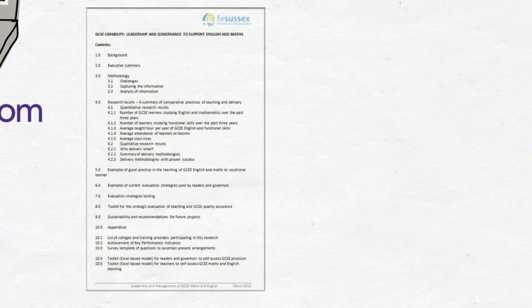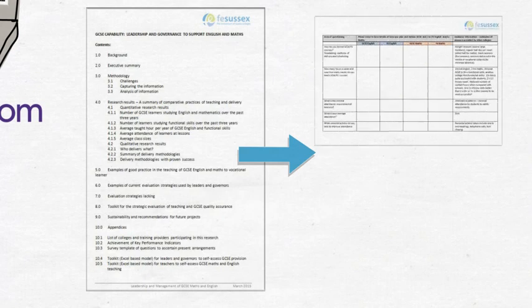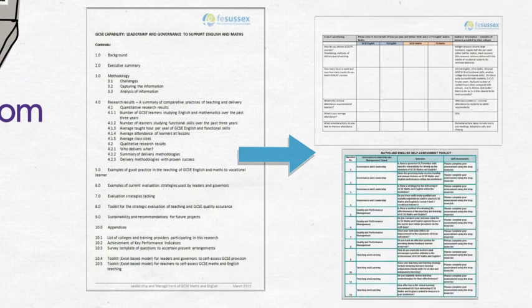Practical elements include an overall evaluation template and two self-assessment toolkits. The toolkits address a range of questions to identify progress in GCSE provision. There is one for senior leaders and governors and another for curriculum leaders. Plus there are examples of good practice in the teaching of English and maths.